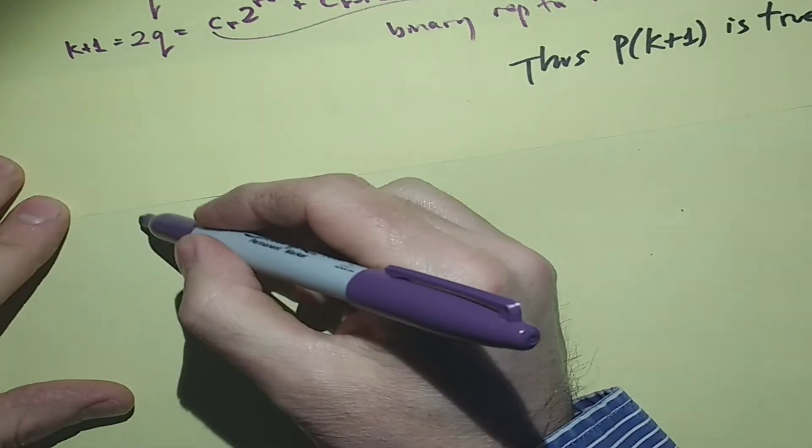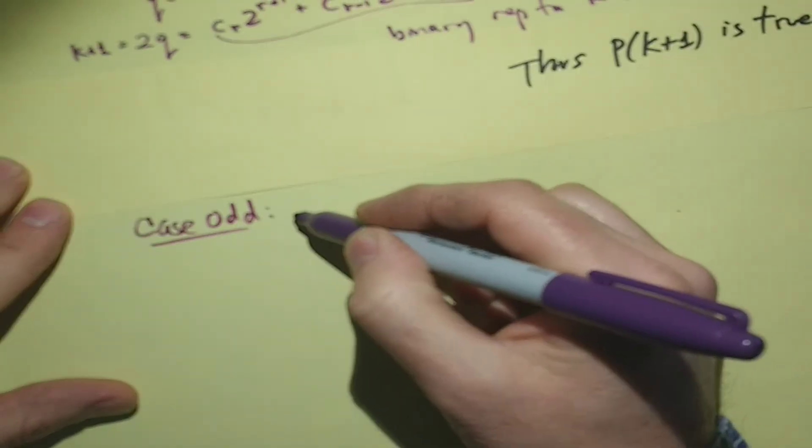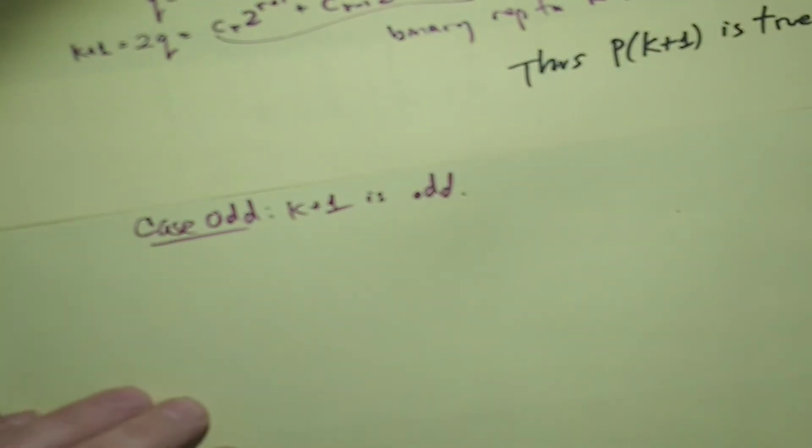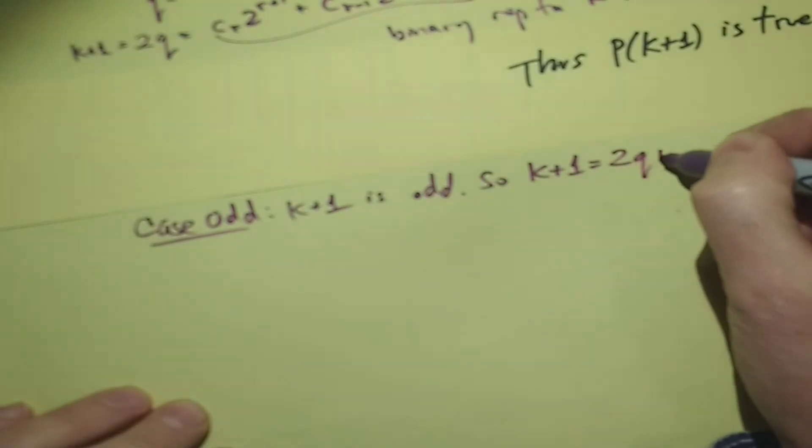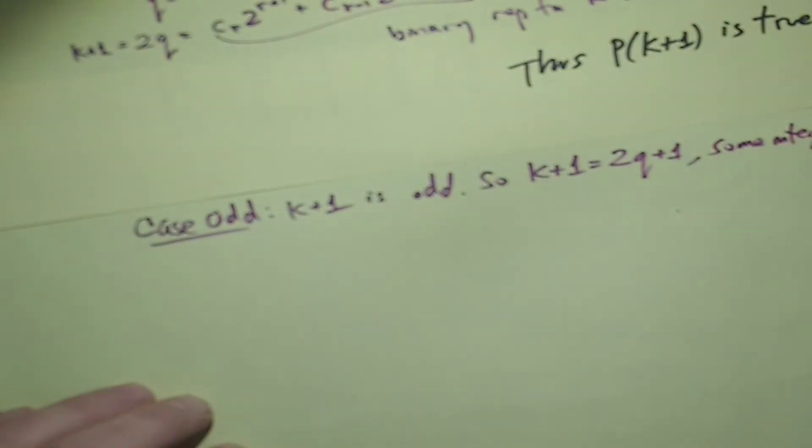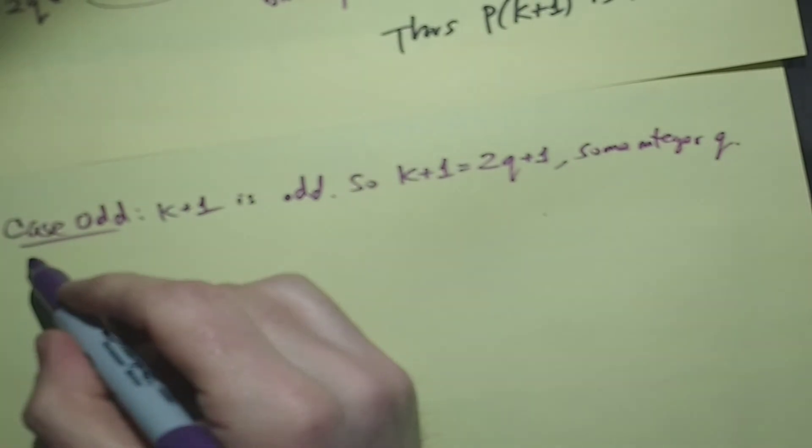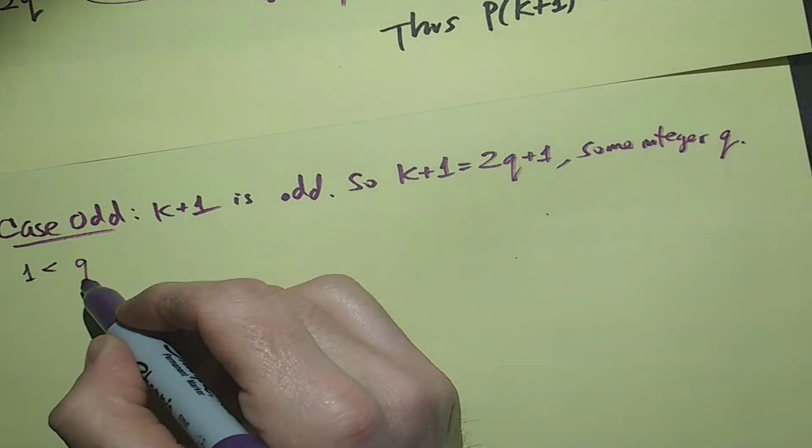Let's call this case odd. k+1 is odd. Now the definition of odd means that k+1 is 2q+1 for some integer q. That means that, well, let's see if we can do this.